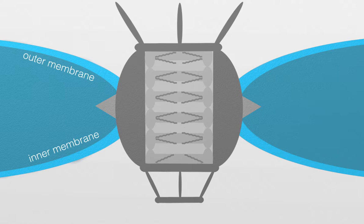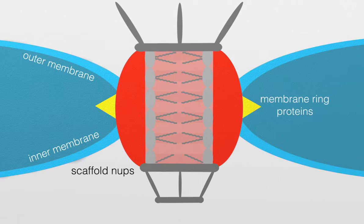Larger molecules are prevented from entering the nucleus by nuclear pore proteins called nucleoporins, or NUPs for short. Scaffold NUPs form a layer around the pore and get held in place by membrane ring proteins.